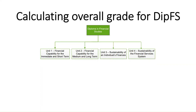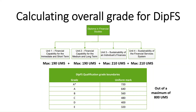So how do you calculate the overall grade for your Diploma in Financial Studies? First of all, you take your two UMS marks from Units 1 and 2 in the Certificate of Financial Studies, and you add them to the two UMS marks for Units 3 and 4 — your Diploma in Financial Studies, the second year of the qualification. Once you total your marks — out of a maximum of 800 — you compare it to the grid on your screen. If you've got over 720 UMS, congratulations, you have been awarded an A star overall. 640 equates to an A overall, 560 a B, and so on.